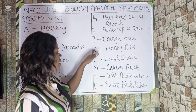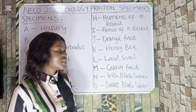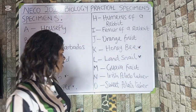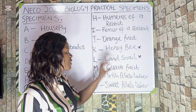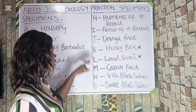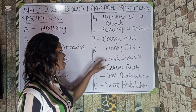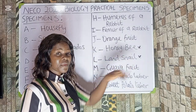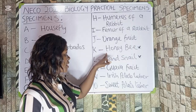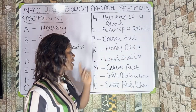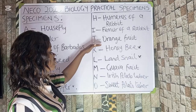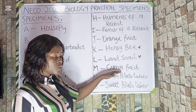Specimen J is orange fruit and Specimen K is honeybee. There is a relationship connecting honeybee and land snail — Specimen K and Specimen L. You may be asked about their differences or their habitats — the habitat of honeybee and the habitat of land snail — so you should take note of that.